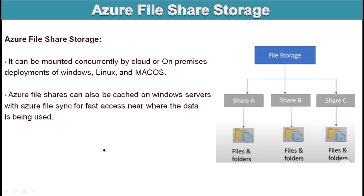So basically inside the FileShare, it can store any type of file — that could be a PDF file, an Excel file, a text file, or any kind of file we can store inside the cloud. We can also mount it concurrently by cloud or on-premises deployments for Windows, Linux, or macOS. Azure FileShare can be cached on Windows Server with Azure File Sync for fast access.